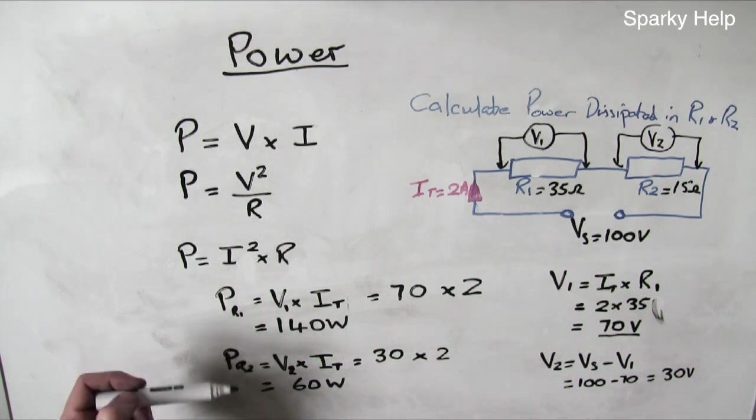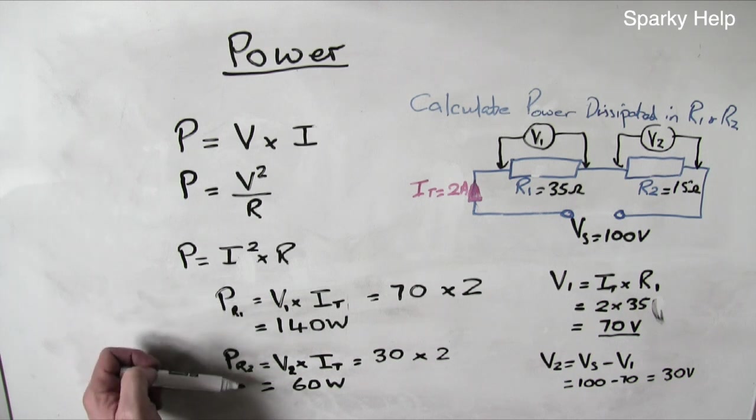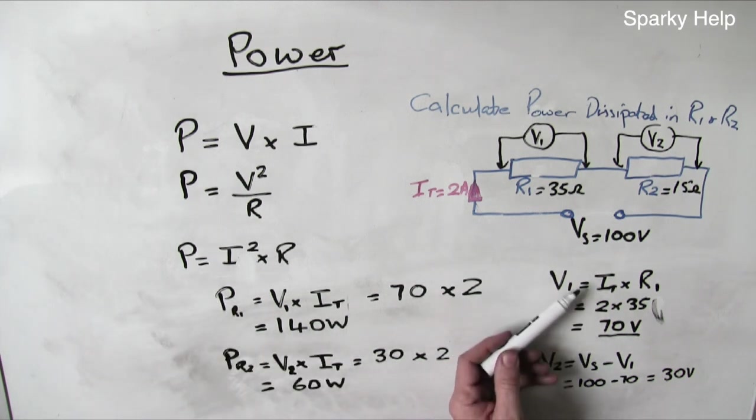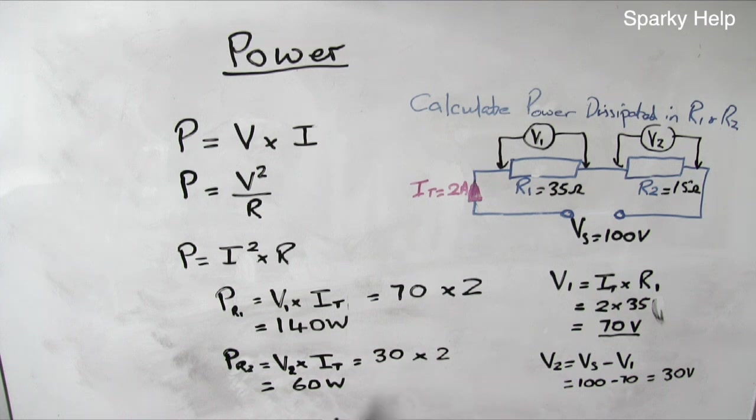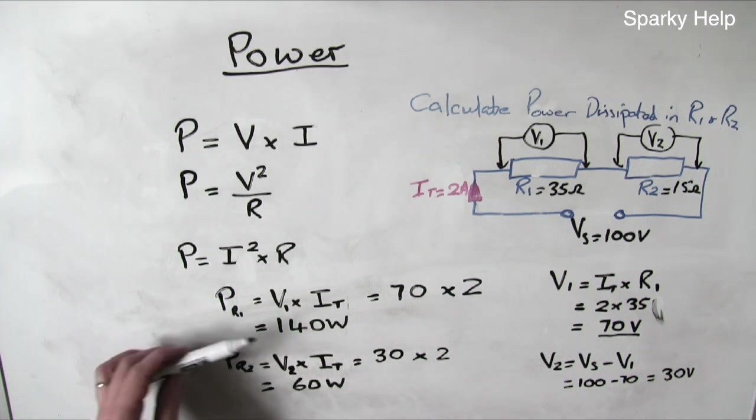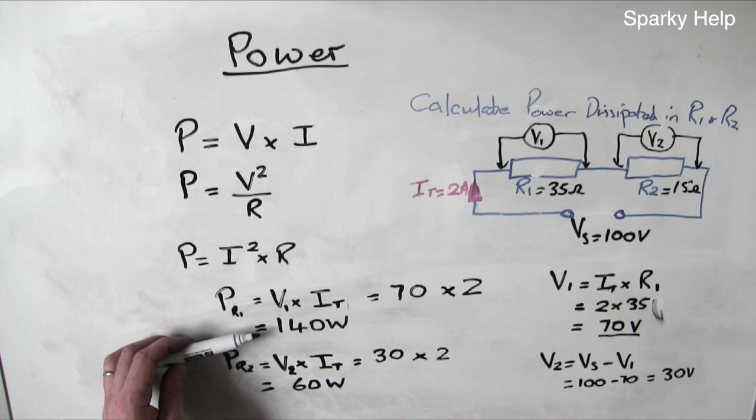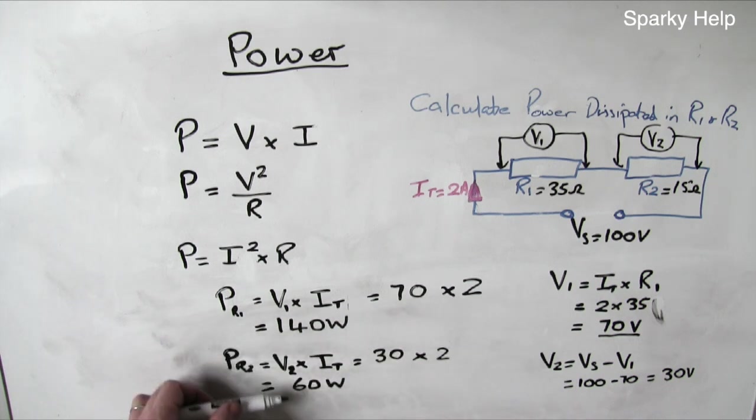Slightly more long-winded, so if you do happen to use that formula, then you have to do something like this over here to get to the same answer. And remember, we can check our answers, because power total we know is 200. So 140 plus 60 gives us 200 watts.